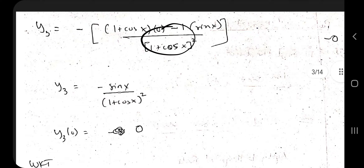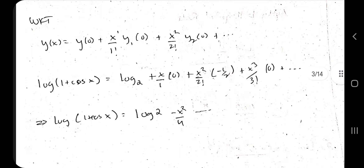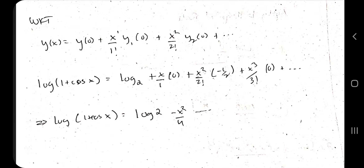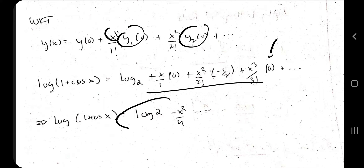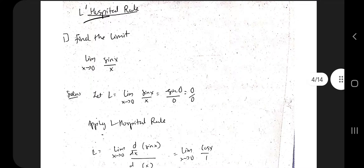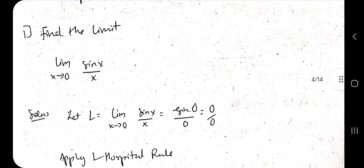If you differentiate with respect to x you get y₁ = (1/cos x) × (−sin x). Put x = 0 to get y₁(0). The same thing goes for y₂: differentiate y₁ to get y₂, then substitute x = 0. Similarly find y₃(0). Then write the series as: y(x) = y(0) + (x/1!)·y₁(0) + (x²/2!)·y₂(0) + (x³/3!)·y₃(0). Just substitute the values of y₁(0), y₂(0), and y₃(0) and simplify to get the final answer. These are the steps to follow for all Maclaurin series questions.